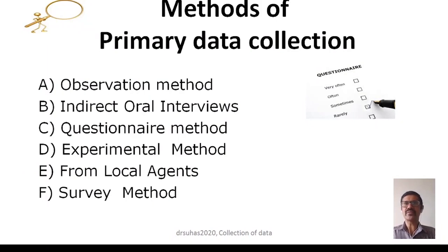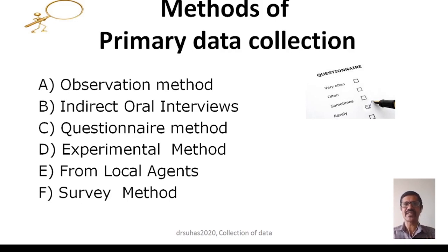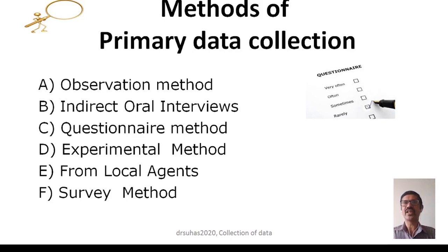Because once you are clear on which type of data you require — whether primary or secondary, whether you are collecting data yourself for the first time or reusing pre-existing data — the methods are quite different. There are various methods of primary data collection. Primary data collection methods are those collected by the investigator for the first time, original in nature, and for the purpose of the researcher.